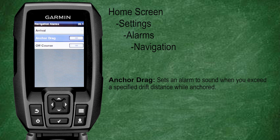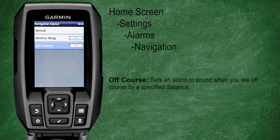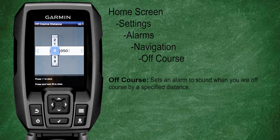The anchor drag alarm is a drift alarm. Turn this on whenever you're anchored and want to know if your anchor is holding or if you've drifted from your set point. When turned on you can enter a distance parameter, and if your vessel moves that far you'll receive an alarm. The off course alarm notifies you when you've veered off your set track, and you can enter a distance parameter to determine how far off course to allow before triggering the alarm.